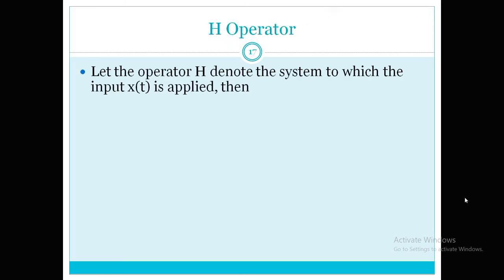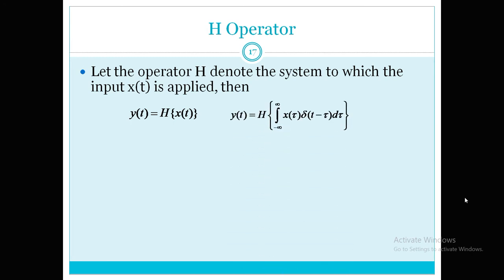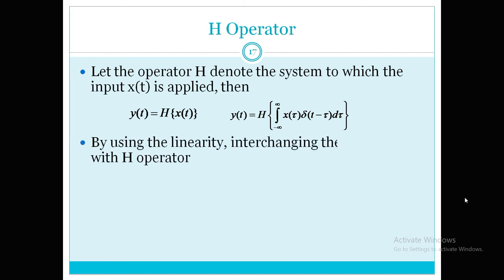We need to apply the H operator. y(t) is equal to H{x(t)}, and we substitute x(t) as the integral from minus infinity to infinity of x(τ) δ(t − τ) dτ. The input signal is represented in terms of shifted impulses. By the linearity property, we can interchange the integration operator and the H operator.